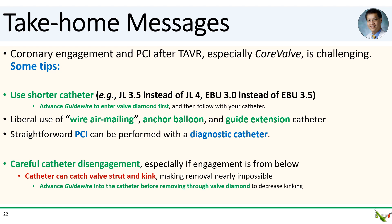If you still can't engage, make liberal use of the air mailing technique for wiring, followed by an anchoring balloon, and then a guide extension catheter. If you can get the diagnostic catheter engaged but not a guide, remember that more straightforward PCIs can be performed using just a diagnostic catheter.